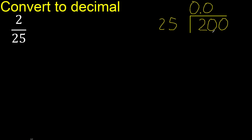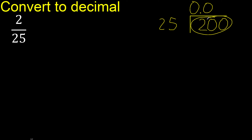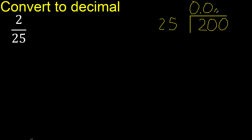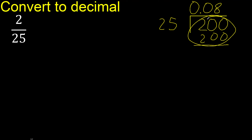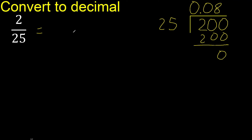200 is not less than 25, therefore work with 200. 25 multiplied by what number is nearest to 200? 25 multiplied by 8 is exactly 200. Subtract: 200 minus 200 is 0. This number is the nearest number. Finish, because there is no number that goes down.